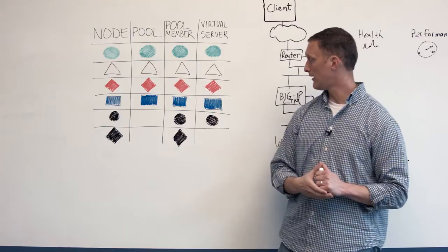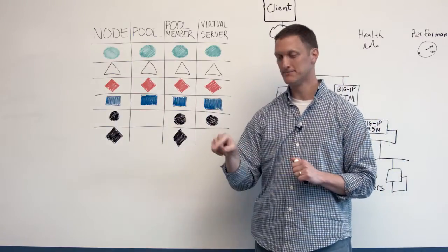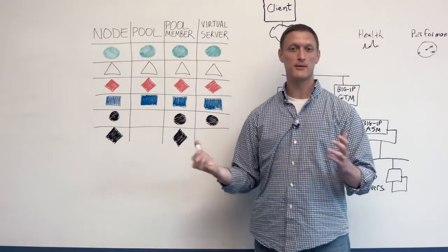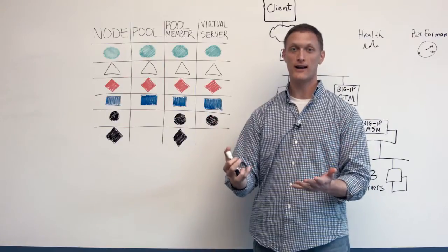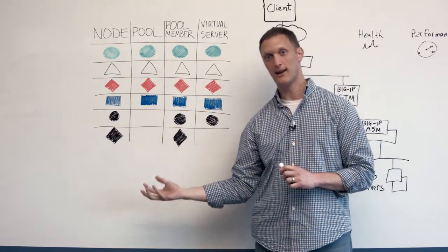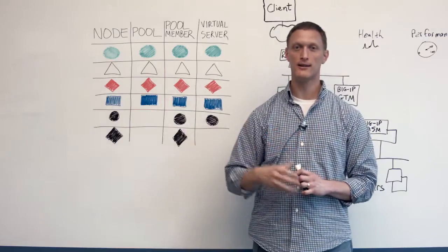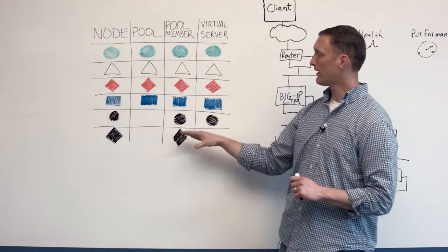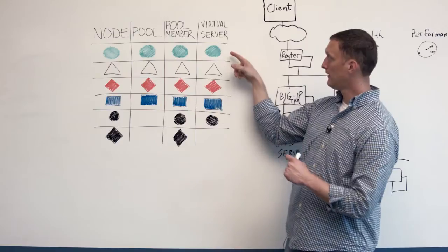And then the last one is this blue square. The blue square basically means that you don't have a monitor on that object right now or you do have a monitor and it just has not received any response yet.